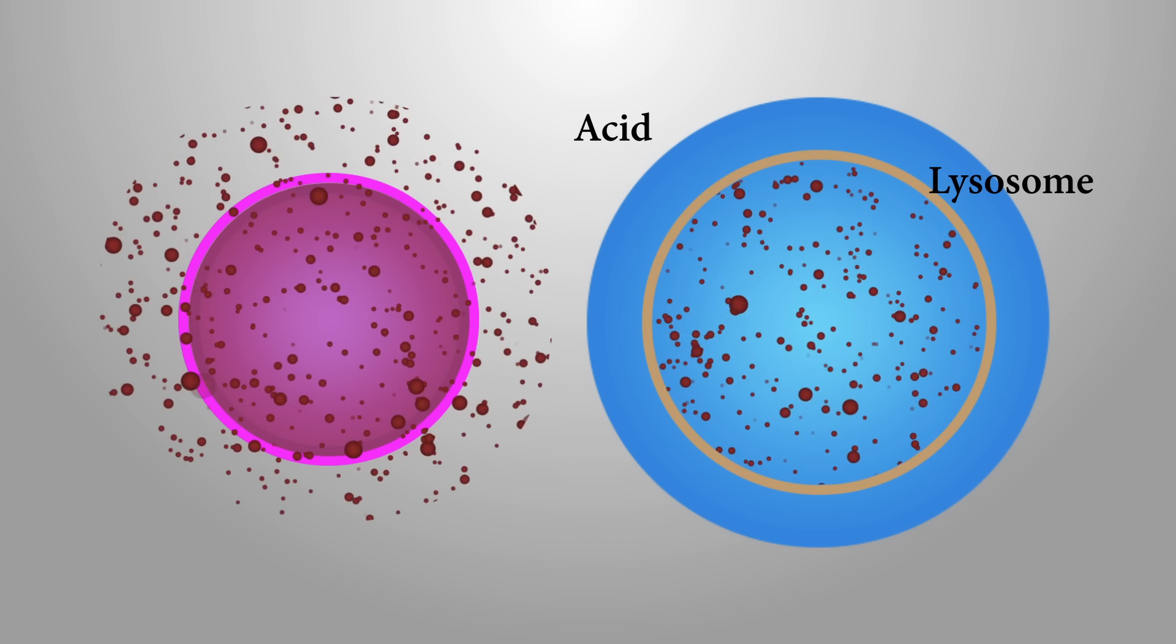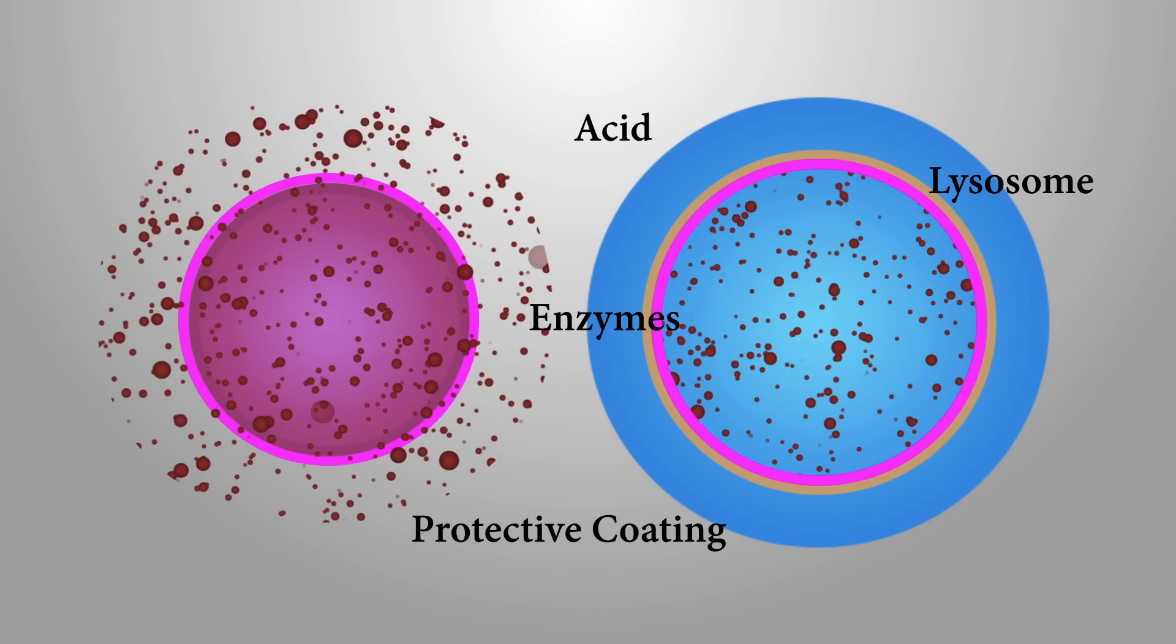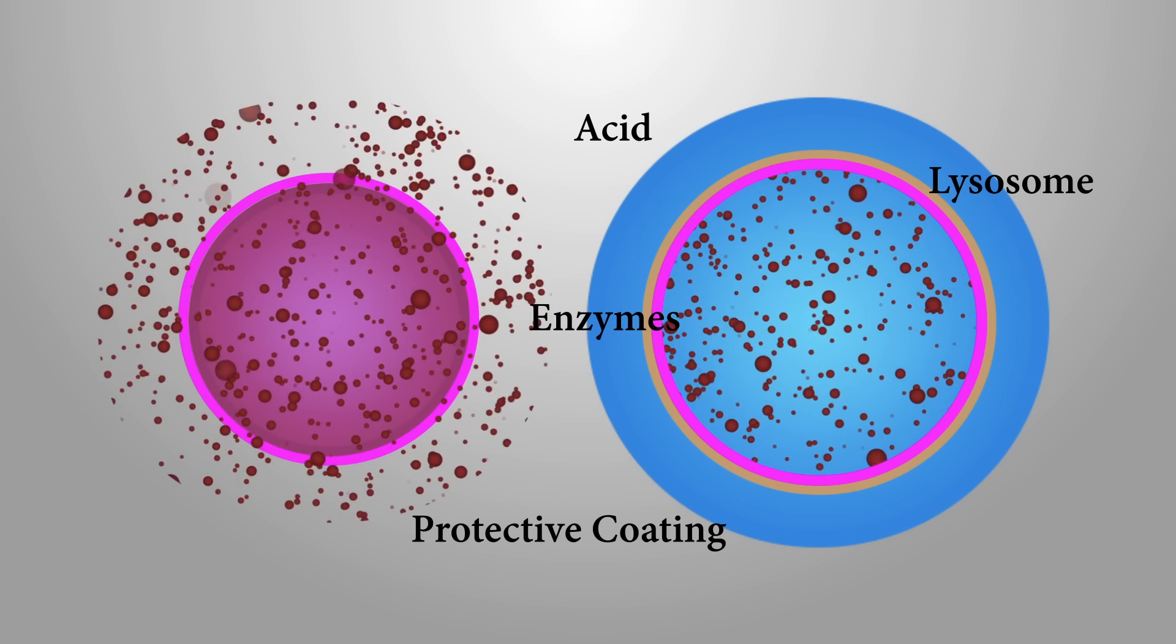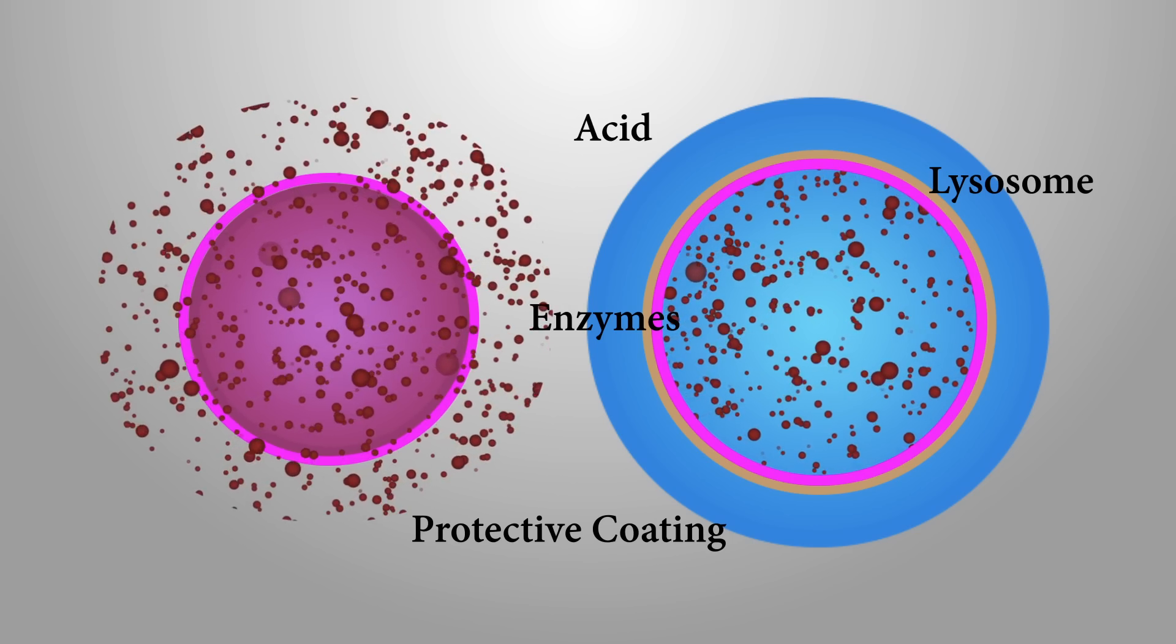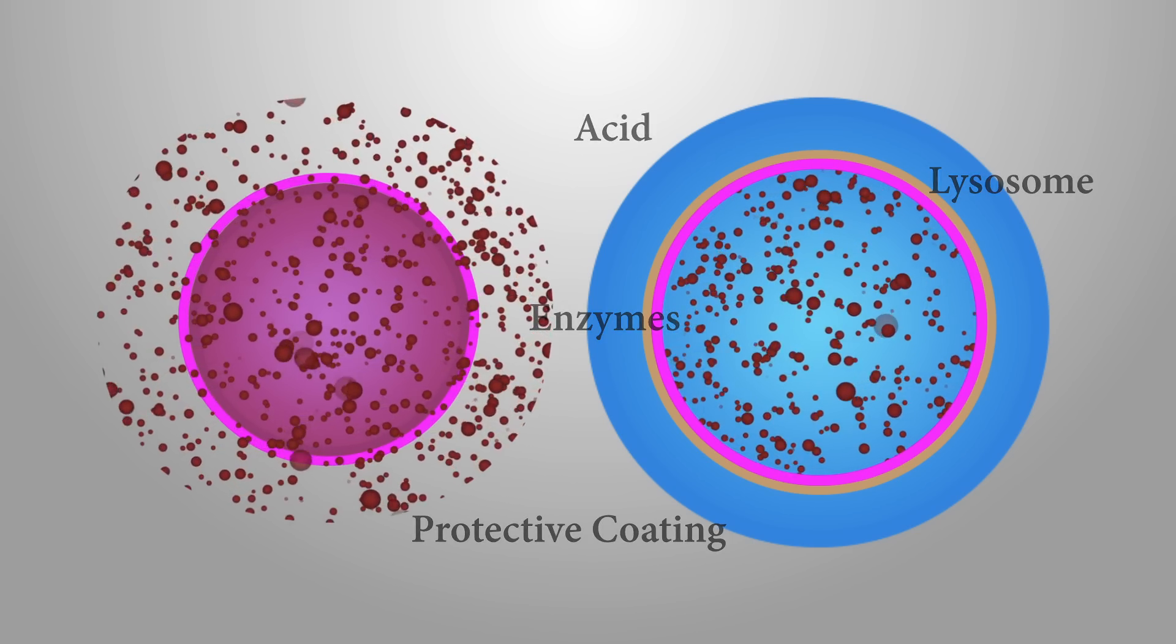Both have acid, both have enzymes, both have protective coating against the acid and enzymes. Cancer cells use this environment to kill nearby normal cells. Lysosomes use this environment to break down and recycle parts for the cell to reuse.